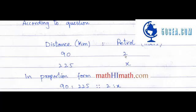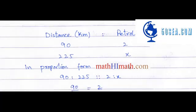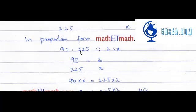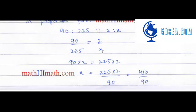So it's 90 km to 2 liters of petrol, and we need to find x liters for 225 km. We can write this as a proportion: 90 to 225 equals 2 to x.